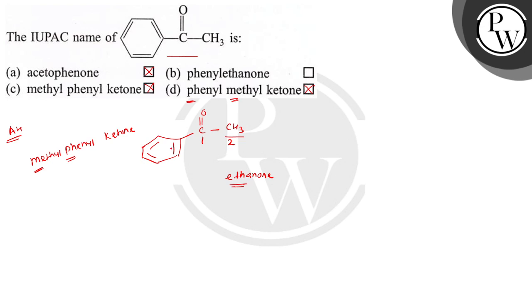It is Ethanone and the substituent is Phenyl. Therefore, the nomenclature will be Phenyl Ethanone. The IUPAC name of the compound is Phenyl Ethanone.